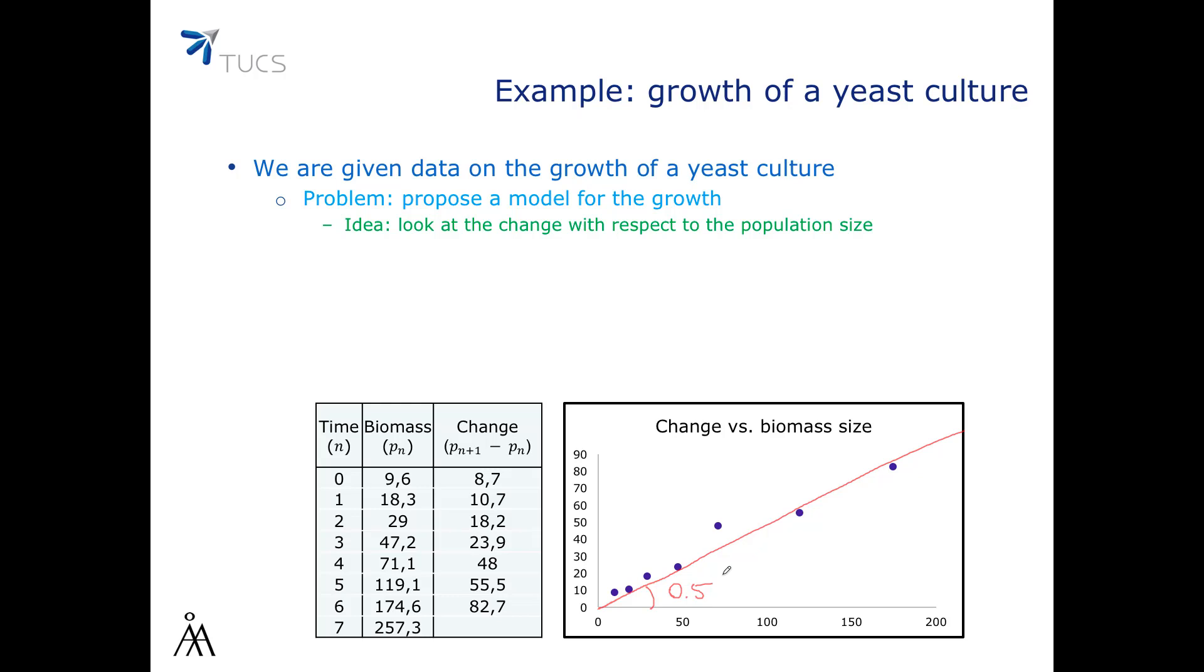So our proposed model will be delta P(n), which is P(n+1) minus P(n) is 0.5 times P(n). And the general form of the model is P(n+1) equals 1.5 times P(n). This means that P(n) is 1.5 to power N times P0. And this means, since P0 was 9.6, is 1.5 to power N times 9.6.